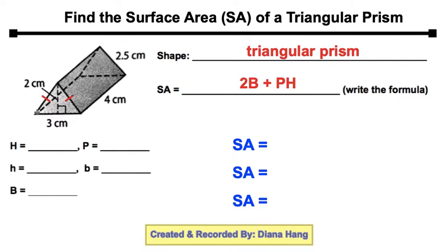We have two triangular bases, one in the front here and one towards the back. It kind of looks like a tent. Are you able to identify the base and the height of the triangular base? Let's see if you are correct.